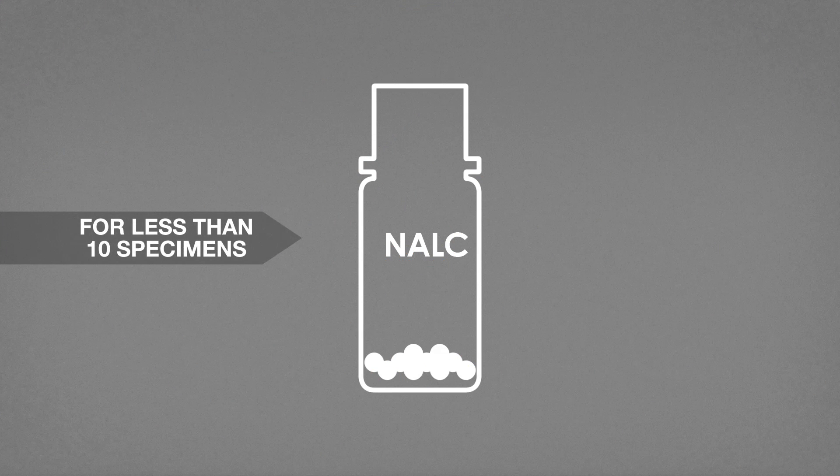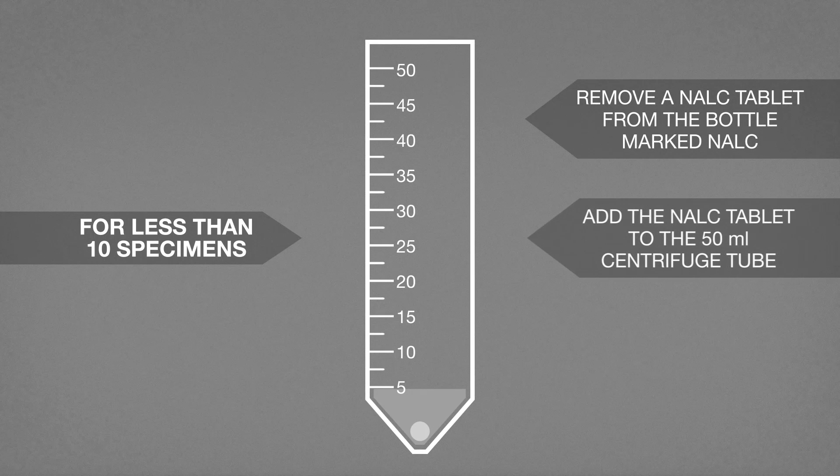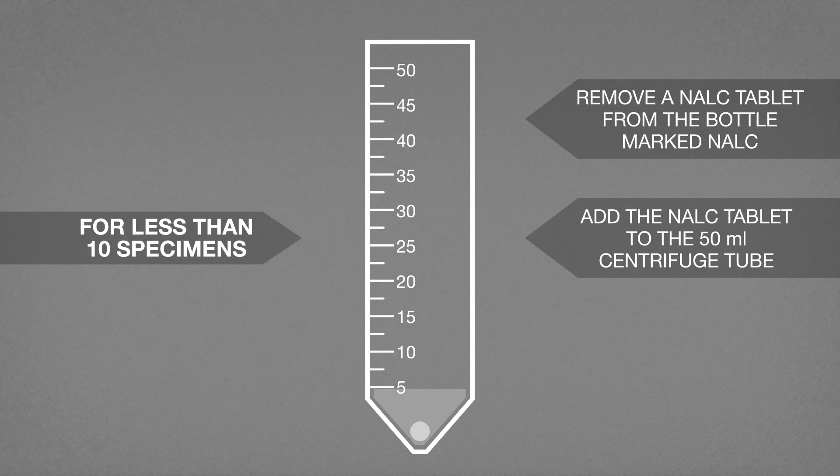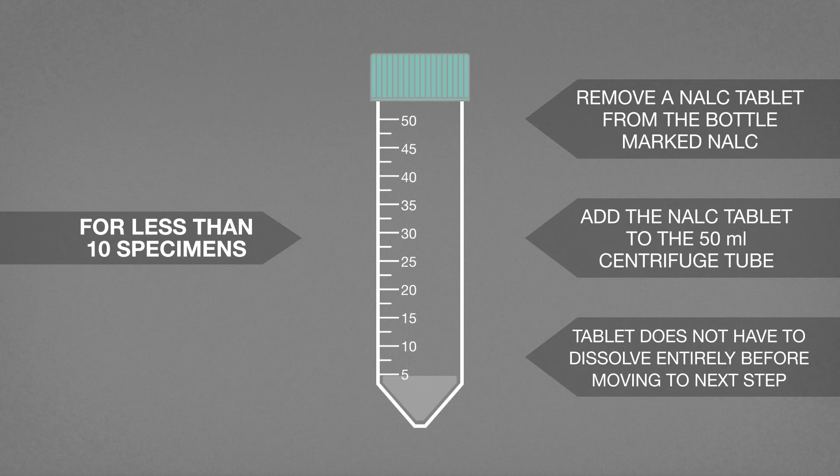If processing less than 10 specimens, remove a NALC tablet from the bottle marked NALC. Add the NALC tablet to the 50 ml centrifuge tube containing the specimen. The tablet does not have to dissolve entirely before moving to the next step.